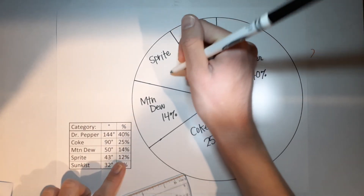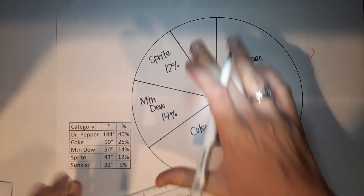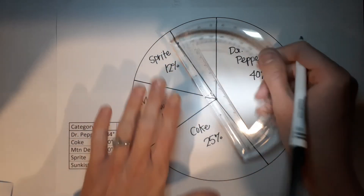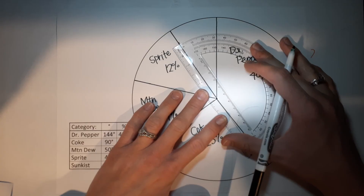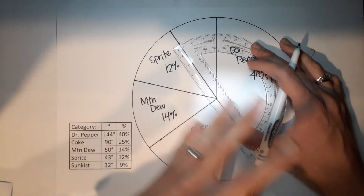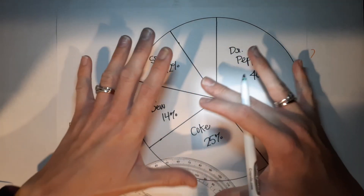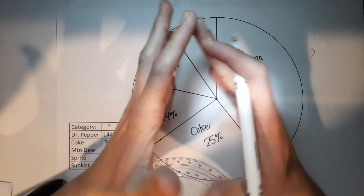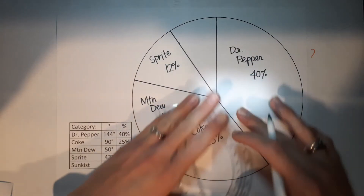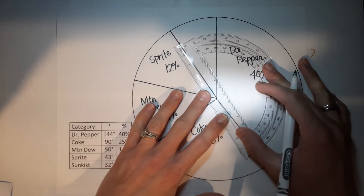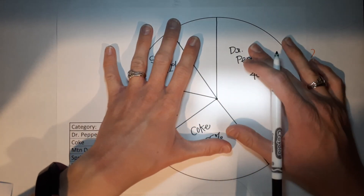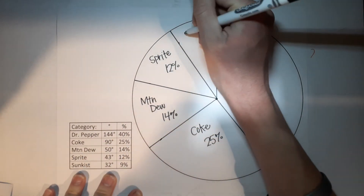Crossing our fingers — the last slice should be 32 degrees for Sunkissed. It comes out very close. Since we did some rounding, it might not be perfectly exact, but as long as it's close you're fine. This final slice is Sunkissed — 9%.